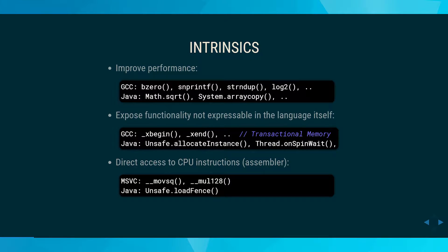Forms which, for example, support mathematical instructions right on a CPU — this implementation in the C library is not used but replaced by the compiler directly with the corresponding machine instructions. In Java, it's mostly mathematical functions or things like System.arraycopy. But intrinsics can also expose functionality which is not expressible in the language itself.